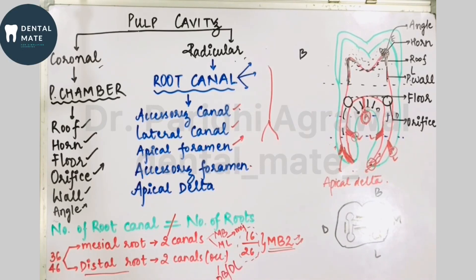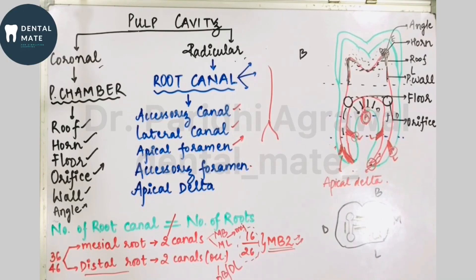With this we cover the basic terminologies and anatomical part of the pulp cavity. In coming videos we'll be discussing classifications of root canals, the isthmus region, apical foramen, guidelines for access cavity preparation, laws of access opening, and each tooth in detail. Don't forget to like, comment, share, and subscribe — hit the bell icon and let me know in the comments if you have any queries or video requests.